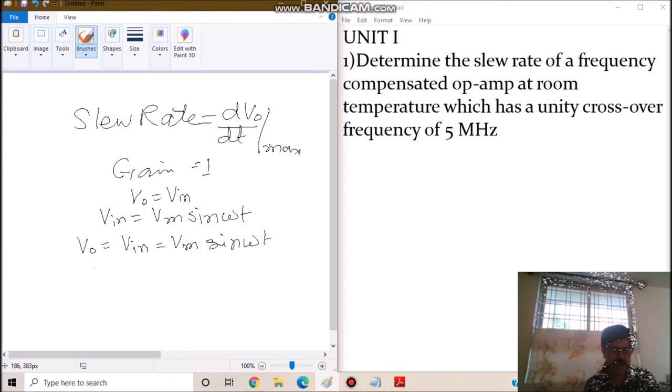We can differentiate it with respect to time and we'll get omega Vm cos omega t. You know that Vm is a constant and the differentiation of sin omega t is given by cos omega t multiplied by omega.